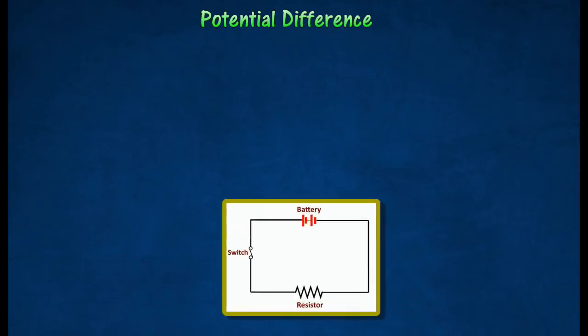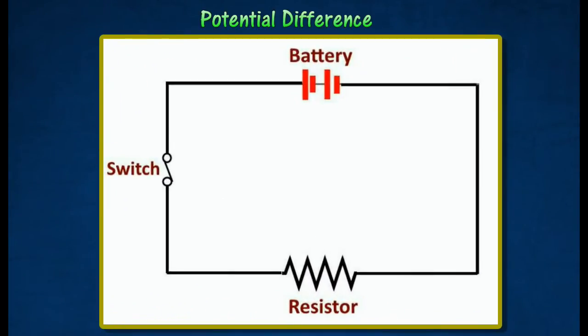Potential difference. In an electrical circuit, the cell or battery pushes the electrons around the circuit. It does this by transferring chemical energy from the materials in the cell to electrical potential energy to the electrons.